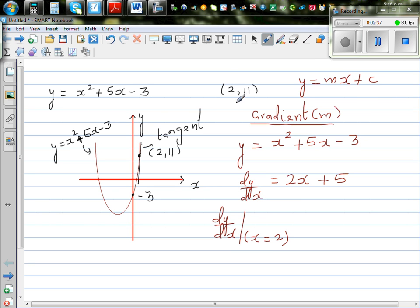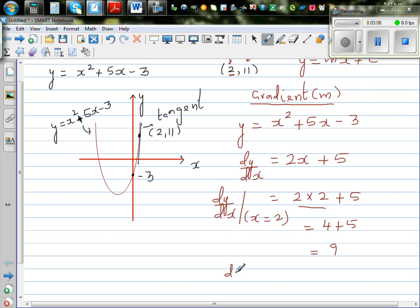So where did I get the 2 from? This is the point, this is your x value and this is your y value. So we know the derivative function is in terms of x, so in place of x I can put 2. So this is 2 times 2 plus 5, which is 4 plus 5, which is 9. So in other words, we can say that dy by dx at x equals 2 is equal to 9.